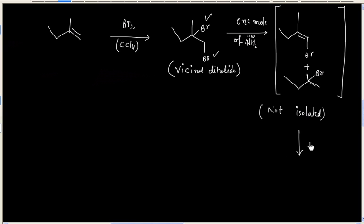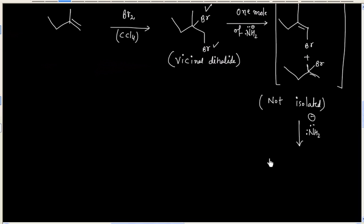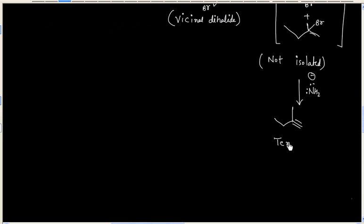Another mole of base removes HBr to give the final product. In this case, final product is a terminal alkyne.